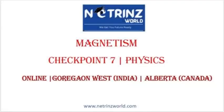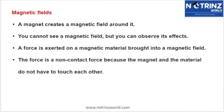Today we start a new topic: magnetism. Let's look at the basics first. What is a magnetic field? You probably know that a magnet always has two poles — a north pole and a south pole. To study magnetism, we need to understand what a magnet is, what a magnetic field is, how it is generated, and how it differs from other forces. Magnets create a magnetic field around them.